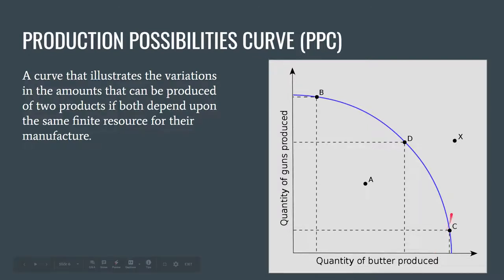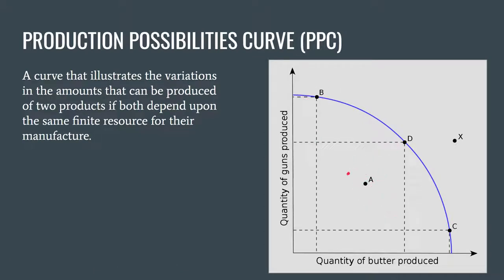Anything along the curve itself represents maximum efficiency — the highest level of output achievable with varying combinations of these two products. Points C, D, and B along the curve are all maximum efficiency. Point A, to the left of the curve, represents an inefficient level of output. At point D, the producer may be making five guns and five tons of butter, while at point A they might only be making three guns and three tons — less than is theoretically possible.